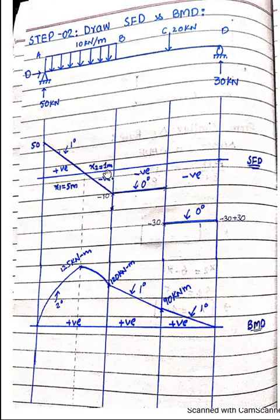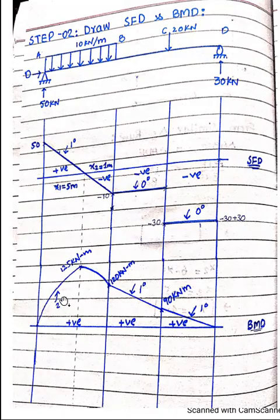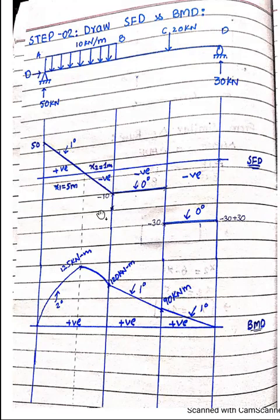With x1 equals 5 meters and x2 equals 1 meter: the area under the positive triangle is 50 into 5 divided by 2 equals 125 kilonewton-meter. Since the degree of shear force is one, the bending moment diagram has degree two — drawn as a curve. The area under the negative triangle is 10 into 1 divided by 2 equals 5, so subtracting: 125 minus 5 equals 120 kilonewton-meter.